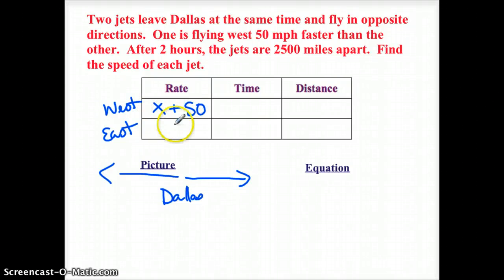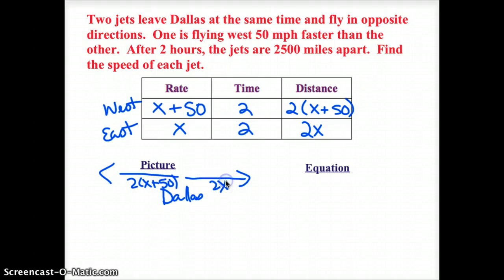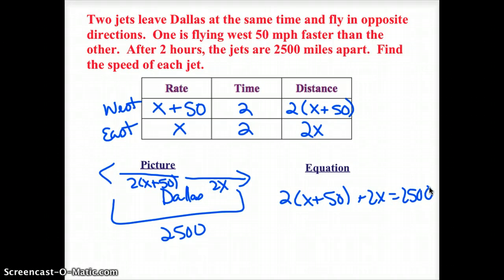East, I'm going to just call that X. I know both of their times are 2. And I know their distances is rate times time. So 2 times X plus 50. And this is 2X. The tricky thing about this problem is that those distances are not equal. All I know is they're 2,500 miles apart. So my equation should look like 2 times X plus 50 plus 2X equals 2,500. You'll have to solve that on your own.